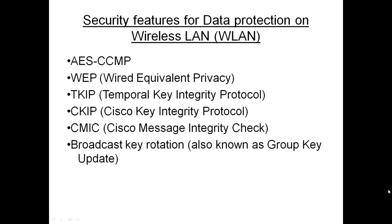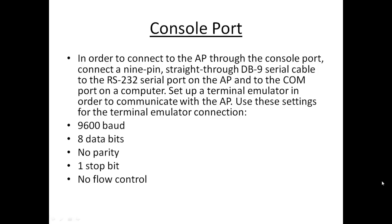Now let's see how to configure the access point. We can use various methods to configure the access point, such as GUI, CLI, or console port. To use the console port, we need to connect the access point through the console port using a nine-pin straight-through DB9 serial cable to the RS-232 serial port on the access point and the COM port on the computer.